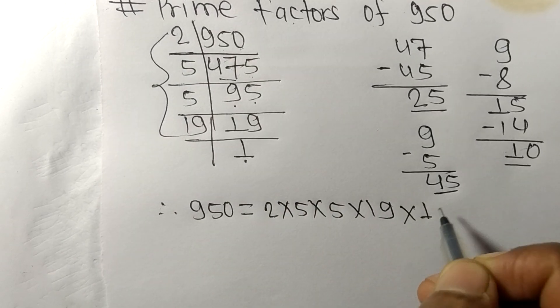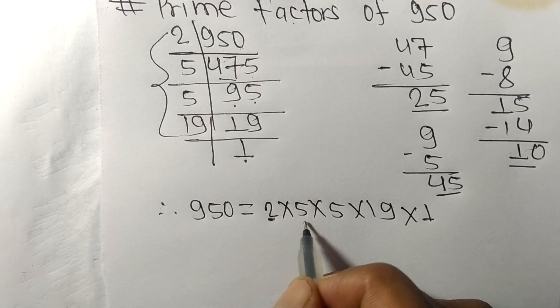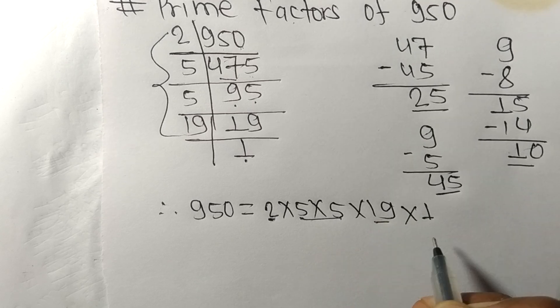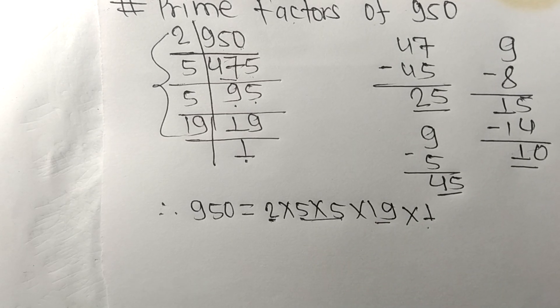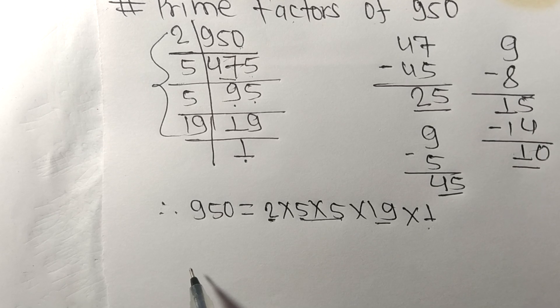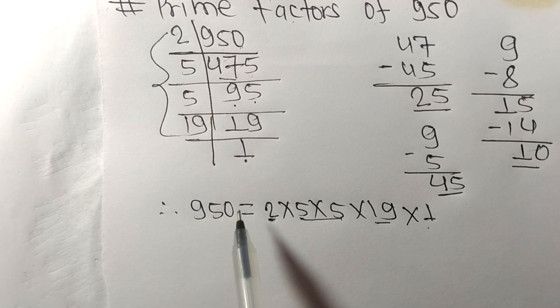From here, here it is one. So these two, five, nineteen, and one are the prime factors of nine hundred fifty. So this much for today, and thanks for watching.